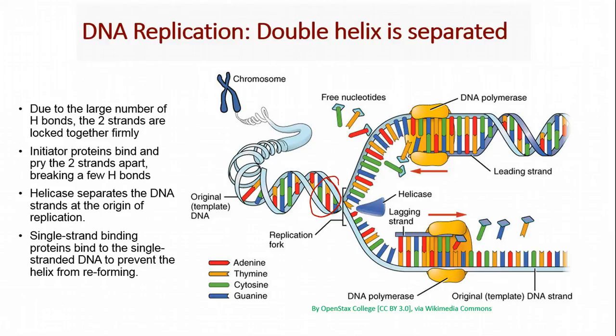These double-stranded DNAs are then separated by helicase. That's this protein here. Helicase moves along the DNA molecules separating the double strands into single strands. Then we have something called single-stranded binding proteins that bind to those single strands and prevent them from coming back together into a double strand.